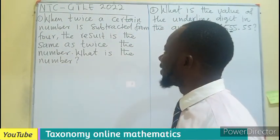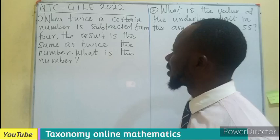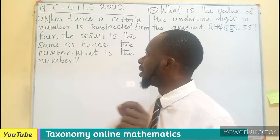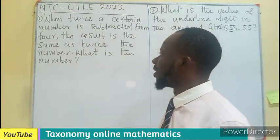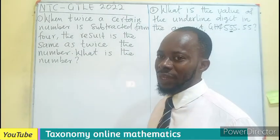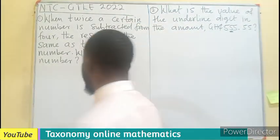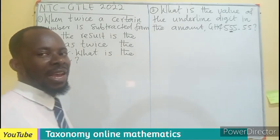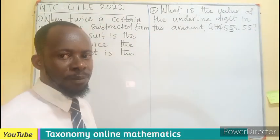Question 1: When twice a certain number is subtracted from 4, the result is the same as twice the number. What is the number? It is a word problem, so let's begin by stating an unknown variable to be the number we are asked to find.